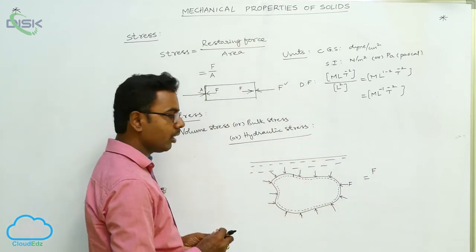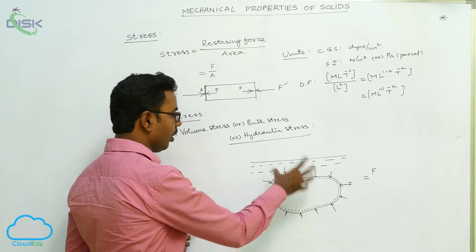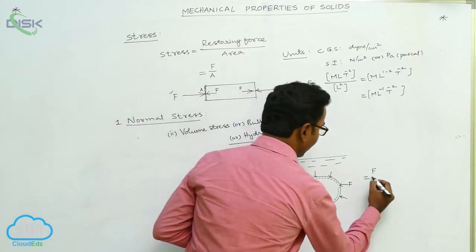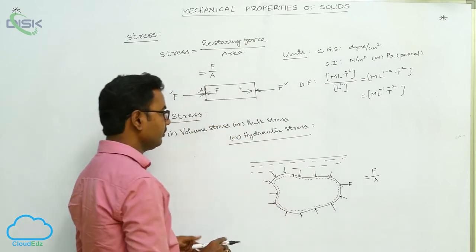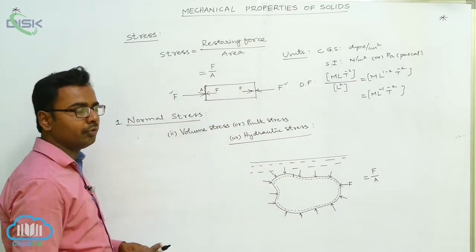F is the total force applied by the liquid all over the surface, on the entire surface. And total surface area of the body is A. So that the volume stress is again calculated by the formula force by area.